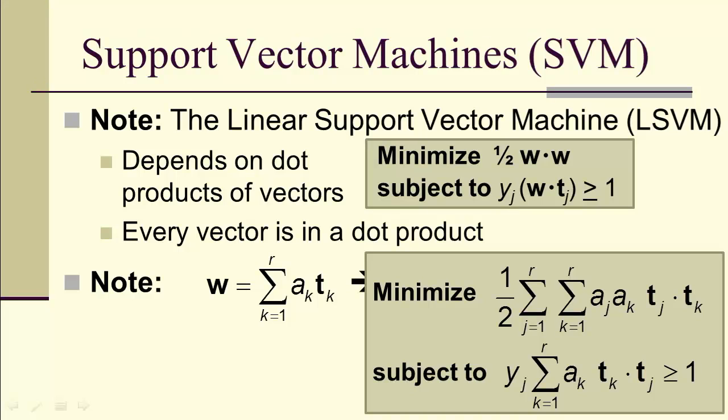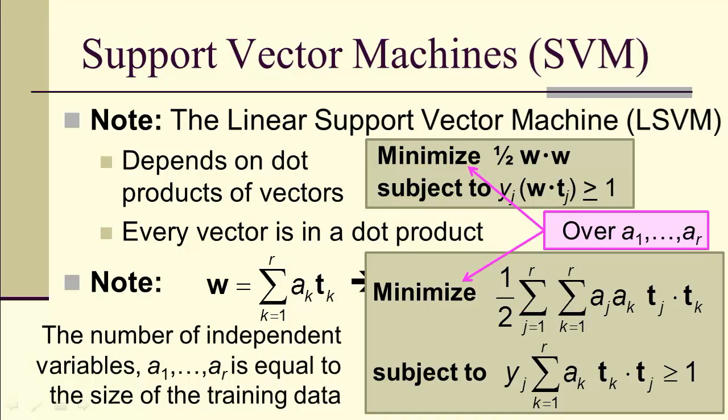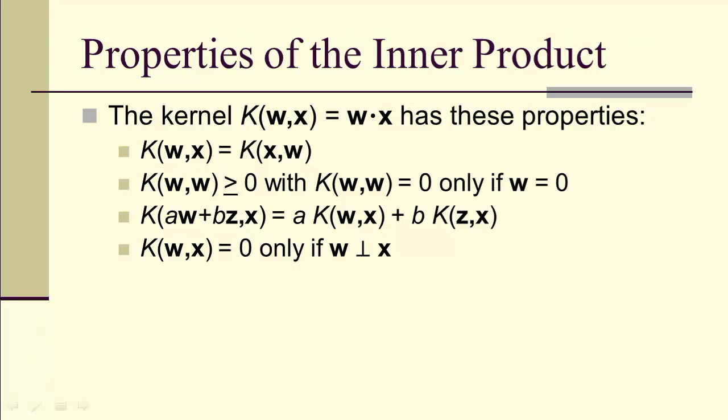We can minimize over these scalars, a_j for j equals 1 up to r, and we can rewrite our constraint in terms of the scalars. And since now we have a problem that's over scalars, then essentially the number of independent variables, which are the scalars, is equal to the size of the training data.